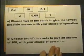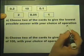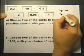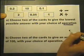Key Stage 3, Level 7. Some more exam questions. Choose two of the cards to give the lowest possible answer with your choice of operation. In other words, you can use either add or subtract, multiply or divide. That's what is meant by operation.